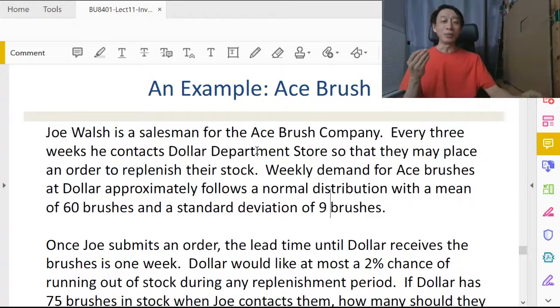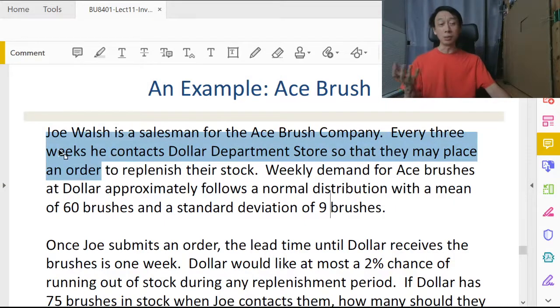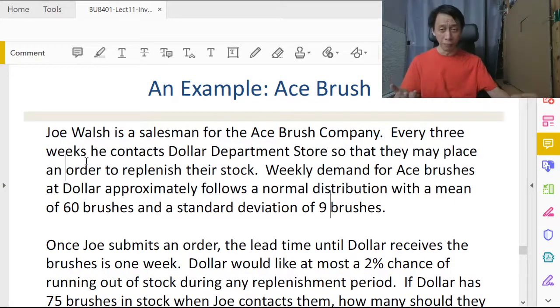So as we can practically imagine, running it as a periodic review, knowing the actual inventory left in Dollar Department Store every three weeks sounds reasonable and sounds, with all factors concerned, a good choice.